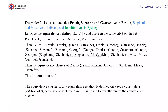Then R is given by all pairs of people living in the same city: (Frank, Frank), (Frank, Susanne), (Frank, George), (Susanne, Frank), (Susanne, Susanne), (Susanne, George), (George, Frank), (George, Susanne), (George, George), (Stephanie, Stephanie), (Stephanie, Max), (Max, Stephanie), (Max, Max), (Jennifer, Jennifer). Then the equivalence classes of R are given by some set of subsets.